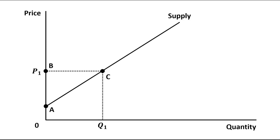So here we have this figure. You can see that there is an upward sloping supply curve and the price level that we have assumed is OP1. At this price level the quantity is OQ1. Now, if we see the producer surplus in this figure, we know that producer surplus is the area above the supply curve and below the price level.